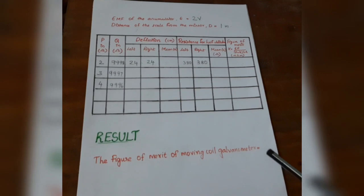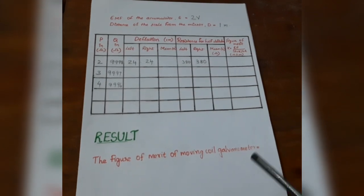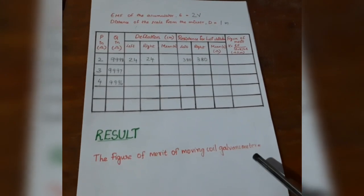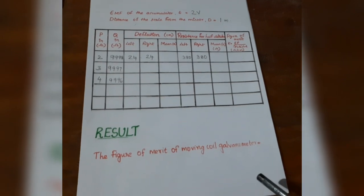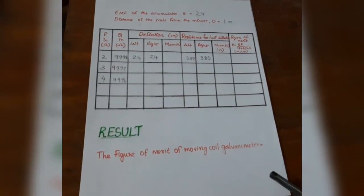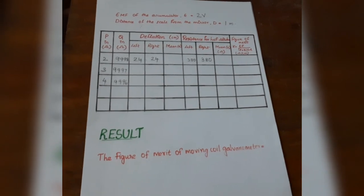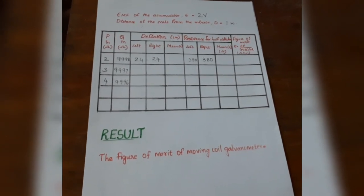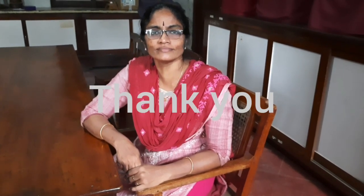That is, even 1 micro ampere of current through this BG will give you a deflection of 1 meter. It is very clear, it is a very sensitive instrument for current. I hope you have understood this experiment to determine the sensitivity of ballistic galvanometer. Thank you.